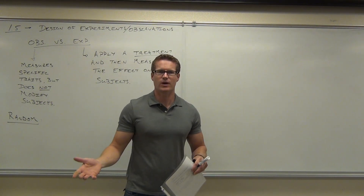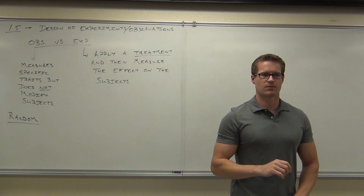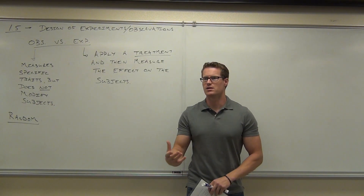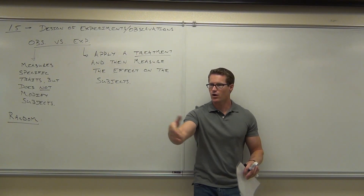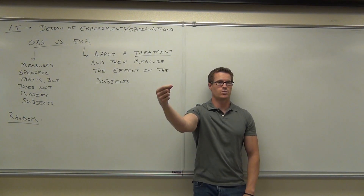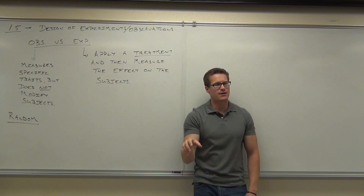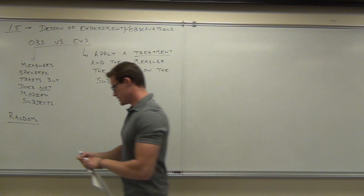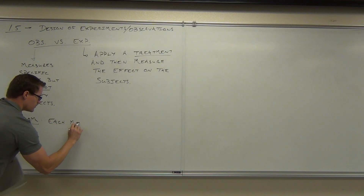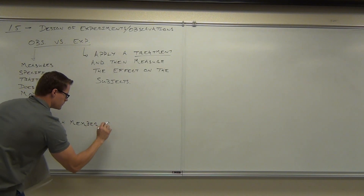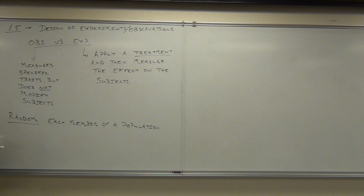What's a good way to do that? What would be an easy way to do that in this classroom? If I had all your names in a hat, mixed them all up, and just went in there and pulled one out — if they're all the same size and shape and you can't tell who's who — that's pretty random. If all your names are there, then that's a random sample. Every person in here would have an equal chance of being picked. Each member of a population has an equal chance of being selected in the sample.